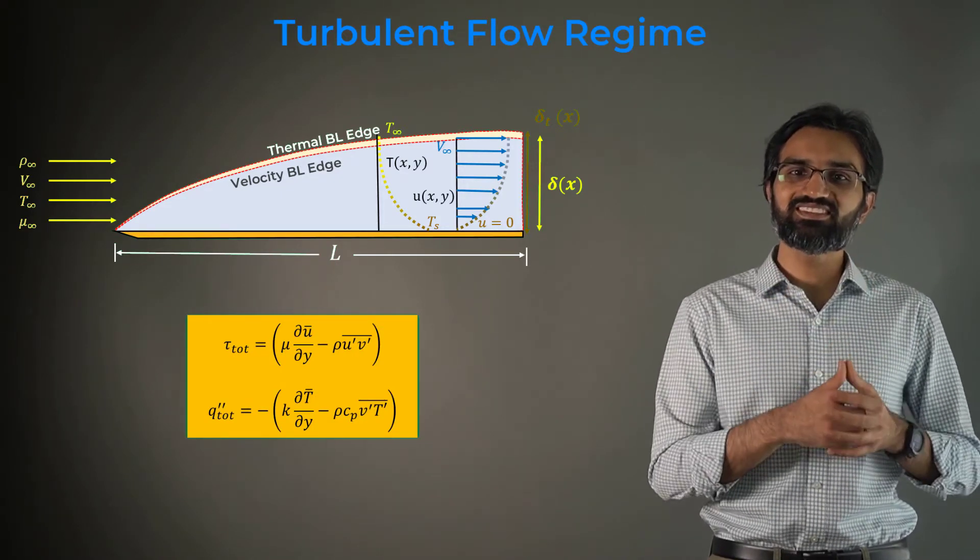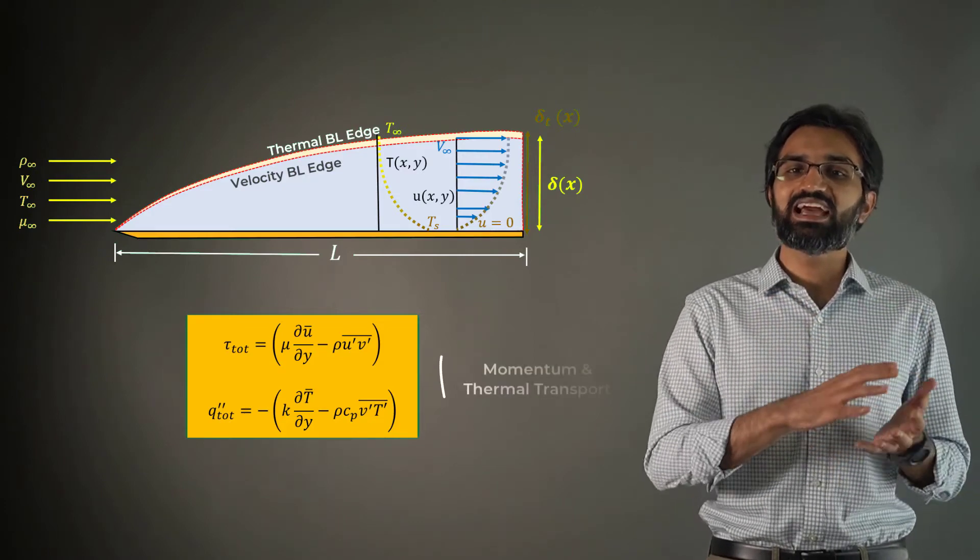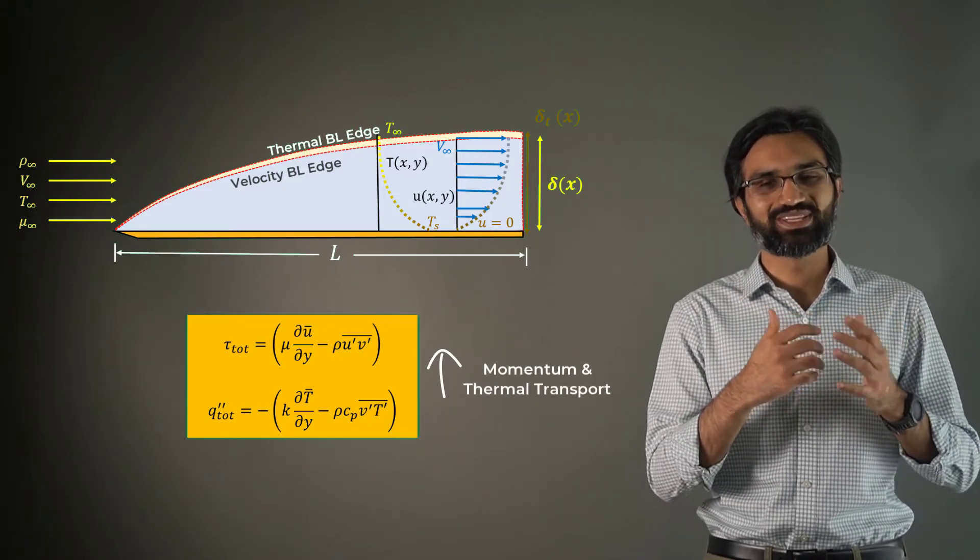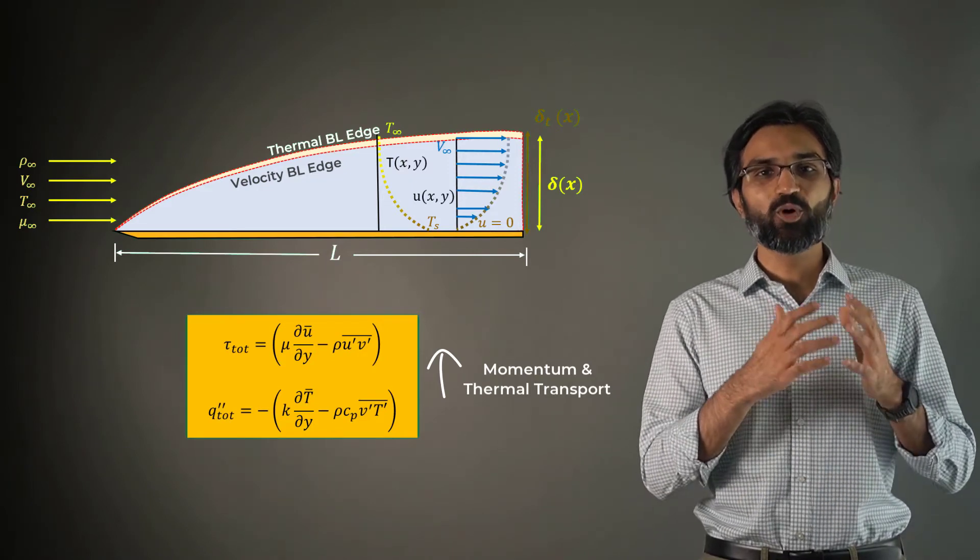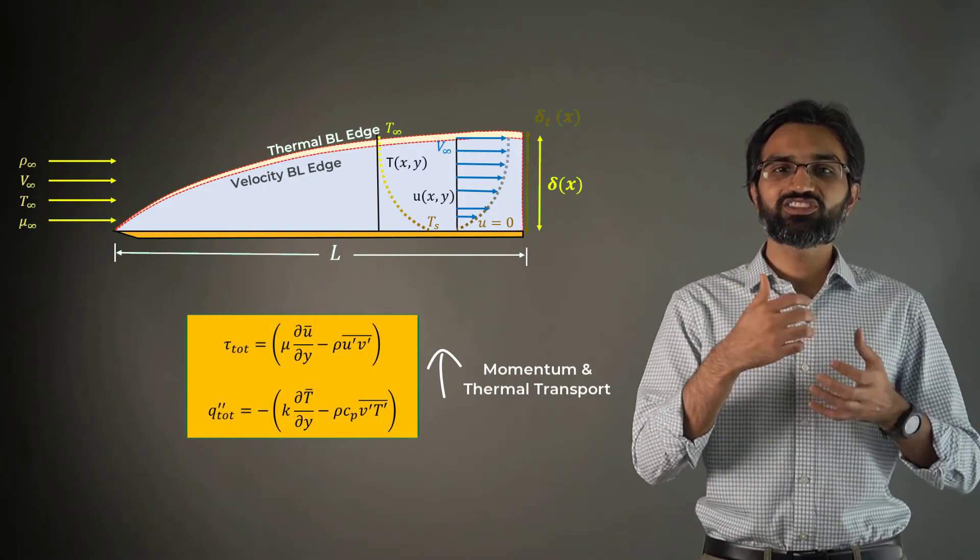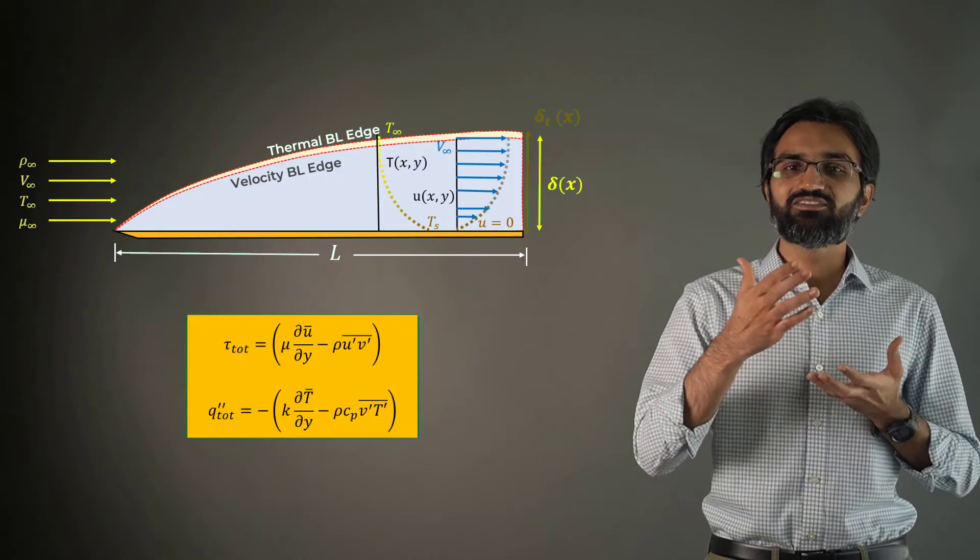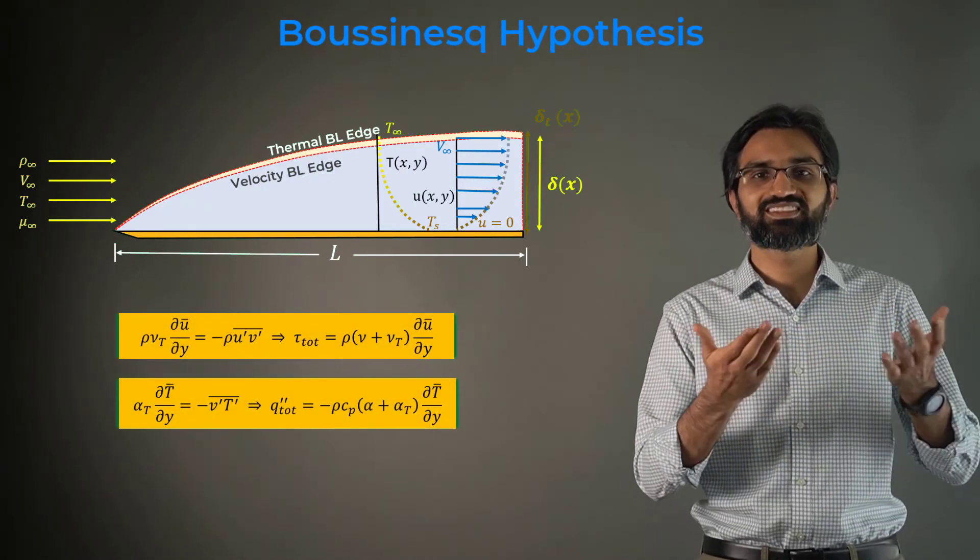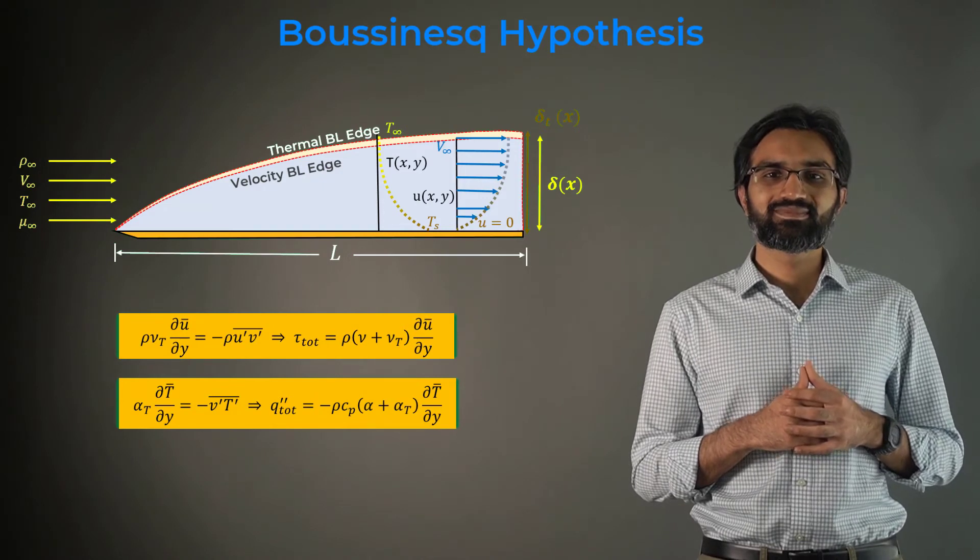The presence of these turbulent terms result in an enhancement of momentum and thermal transport rate as shown here. Both these terms require additional modeling and we make use of the most common modeling approach, the Boussinesq hypothesis.